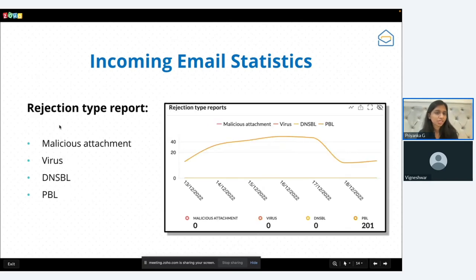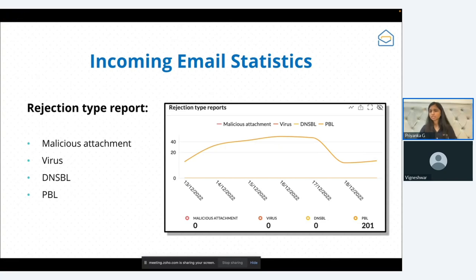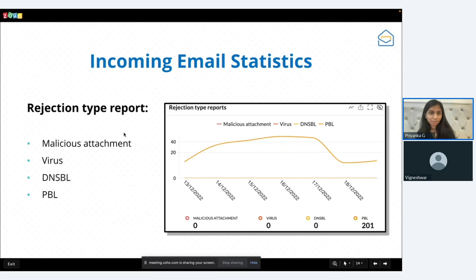The rejection type report shows how many emails were rejected and in what category — malicious attachments, virus, DNS blacklisted, or PBL (IP blacklist). Certain IPs blacklisted by third-party websites will cause emails from those IPs to be automatically rejected. This report gives you a breakdown of all rejection categories.